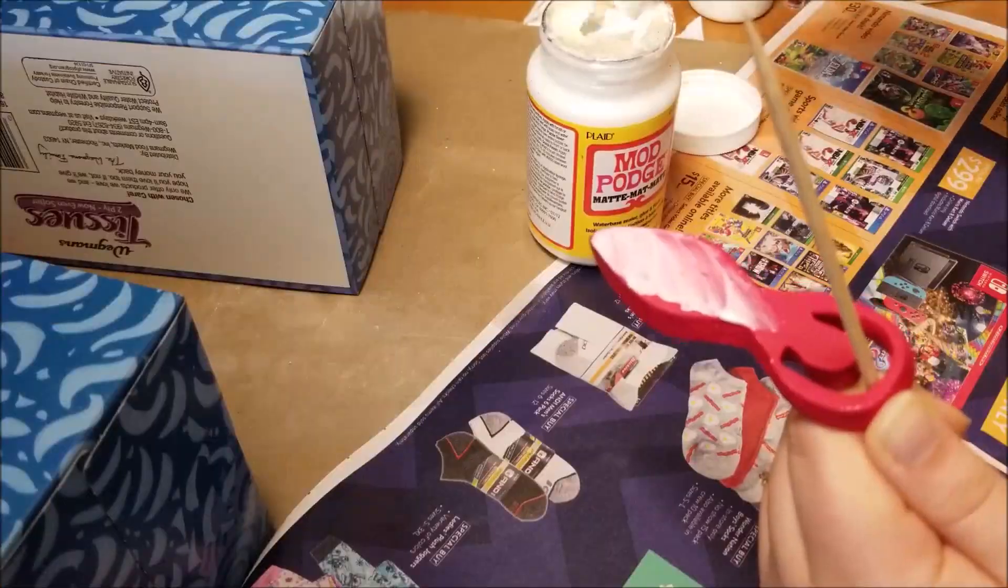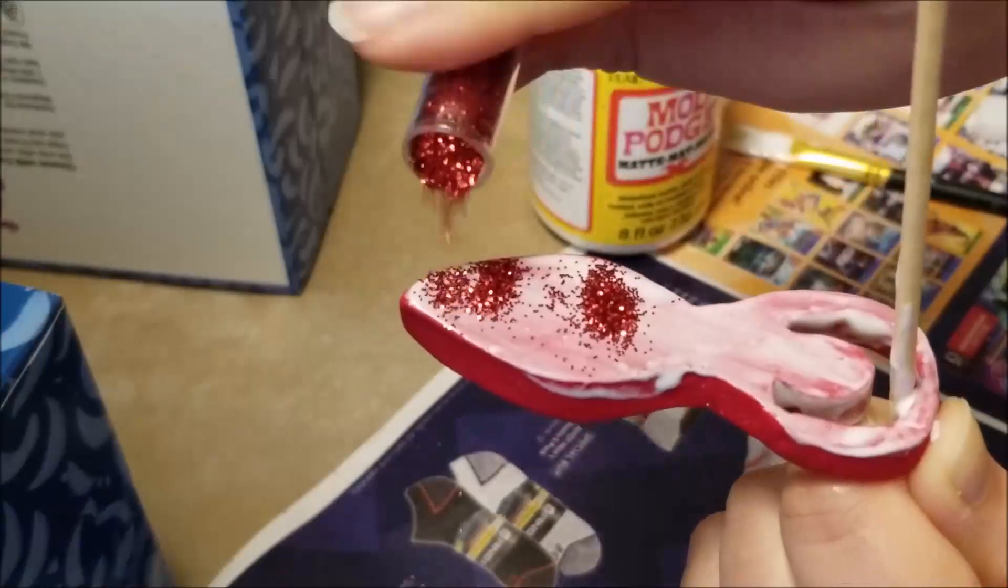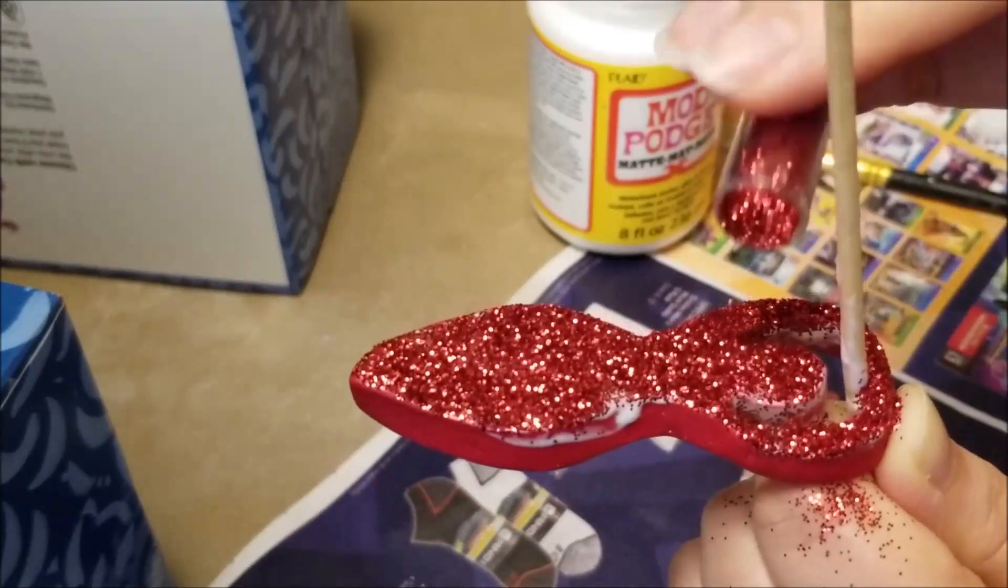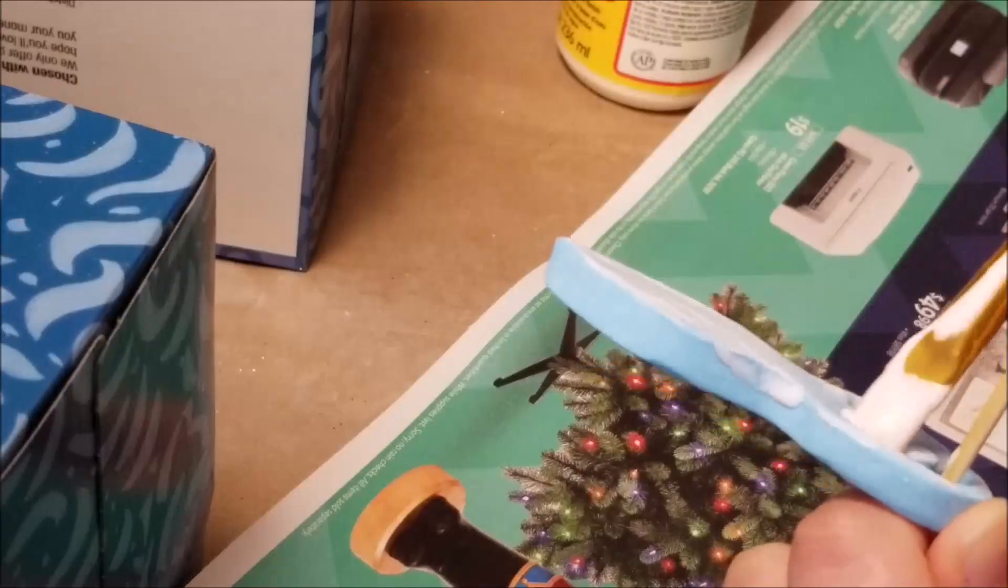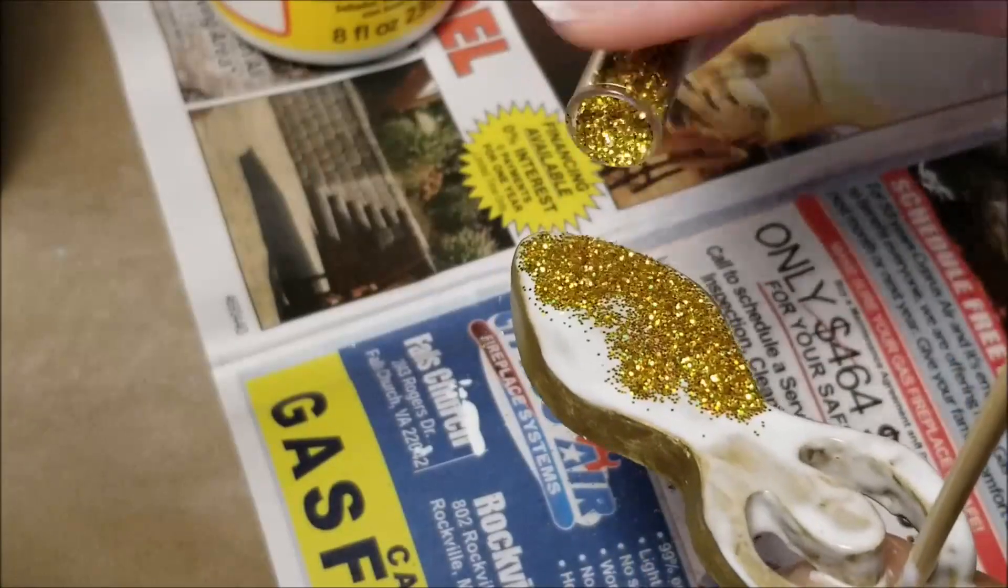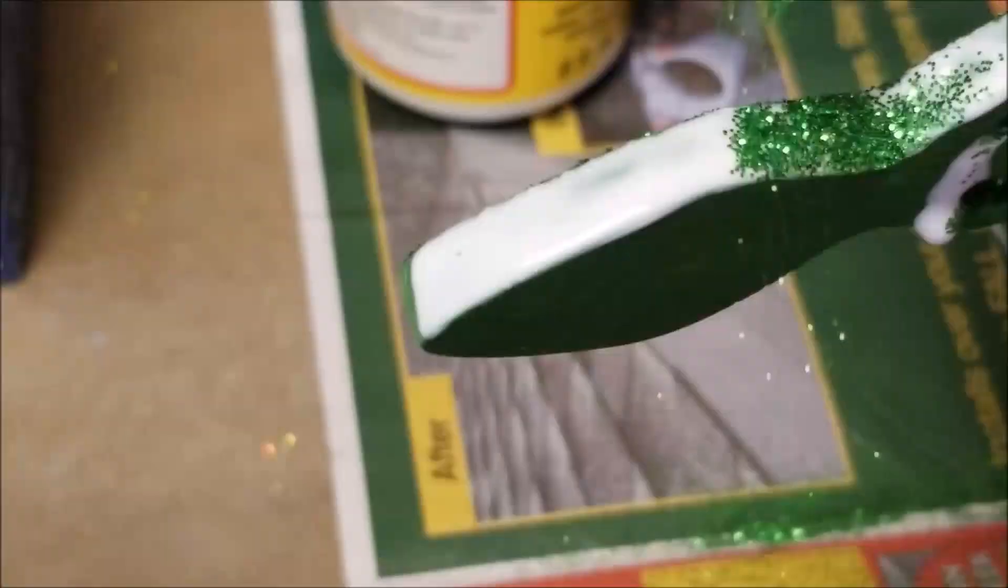Start by covering one surface at a time with Mod Podge, add glitter, then move on to the next section. When you're done, tap the skewer to shake off the excess glitter and hang it to dry. It's good to note that I'm actually using my thumb to give me some leverage and keep the statues steady, so keep that grip until you're ready to add Mod Podge and glitter to the areas your thumb is covering.